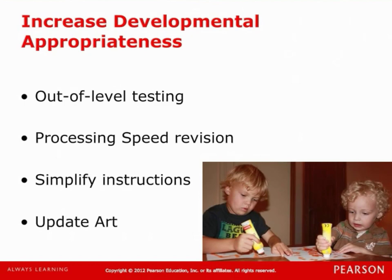Additional feedback from the WPPSI-3 was to look at the processing speed subtests. On the WPPSI-3, about 10% of children could not complete the processing speed subtests because of fine motor weaknesses, which significantly affect a child's ability to use a pencil. To reduce those fine motor demands, a bingo dauber is now used instead of a pencil, and the symbol search and coding subtests have been changed to accommodate this dauber. Additionally, more developmentally appropriate language is being used for instructions by simplifying vocabulary level and eliminating unnecessary wordiness. Finally, the art was updated to be more contemporary, and for security reasons, about 20% of the content was updated.